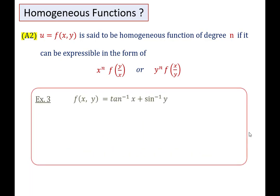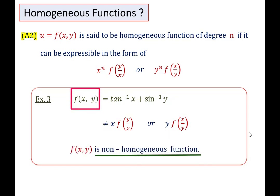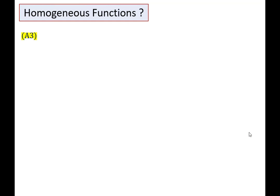Third example: F(X, Y) = tan⁻¹(X) + sin⁻¹(Y), which is not a homogeneous function because we cannot take out X or Y as common. So F(X, Y) cannot be written in the form X f(Y/X) or Y f(X/Y). Hence F(X, Y) is a non-homogeneous function.